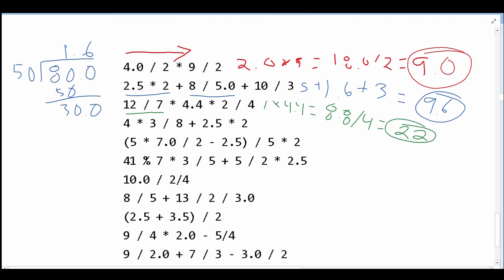Next, we go on to this part where we have 4 times 3, which is 12. We then divide that by 8, which is 1. And then we add 2.5 times 2, which is going to be 5.0. Plus 1 is going to give us 6.0. And that's the answer for that part.